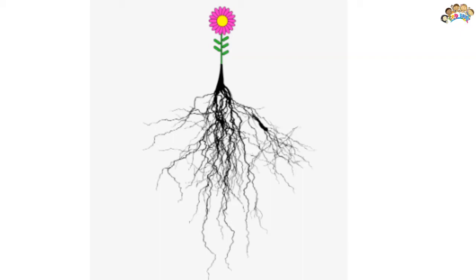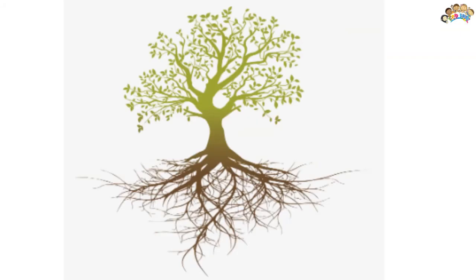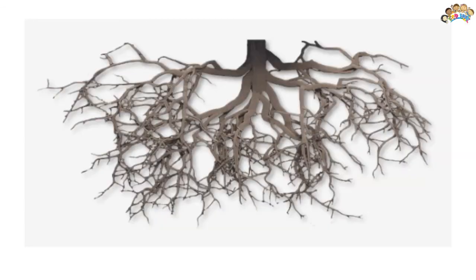Some roots, called adventitious roots, arise from an organ other than the root — usually a stem, sometimes a leaf. They are especially numerous on underground stems, such as rhizomes, corms, and tubers, and make it possible to vegetatively propagate many plants from stem or leaf cuttings.